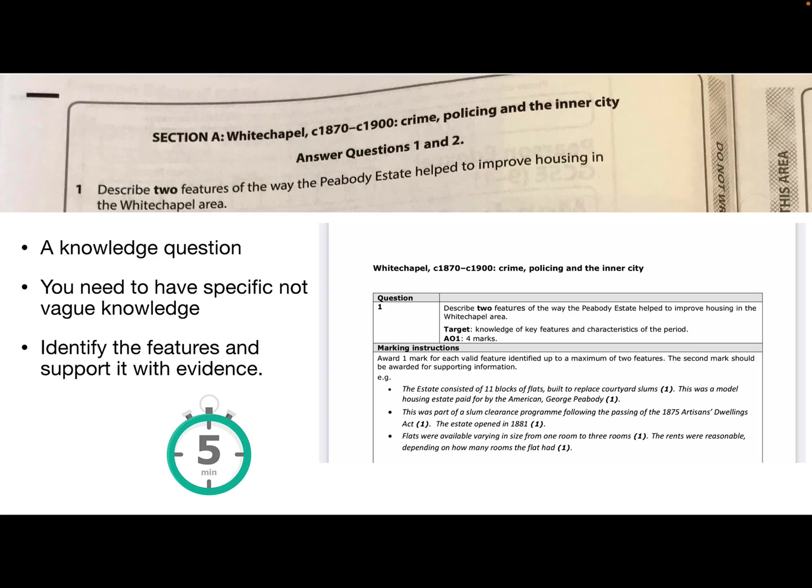Here we have the estate consisted of 11 blocks of flats built to replace courtyard slums. This was a model housing estate paid for by the American George Peabody. So the feature is the model housing estate and the specific knowledge is that 11 blocks of flats built to replace the courtyard slums. You could talk about there maybe that it was going to improve housing. Also it's part of slum clearance, passing of the Artisans Dwelling Act in 1875. So the specific knowledge there is that Artisans Dwelling Act, the slum clearance program, is obviously going to help improve the quality of housing for people and obviously you've also got the estate opened in 1881. That's good detail there.